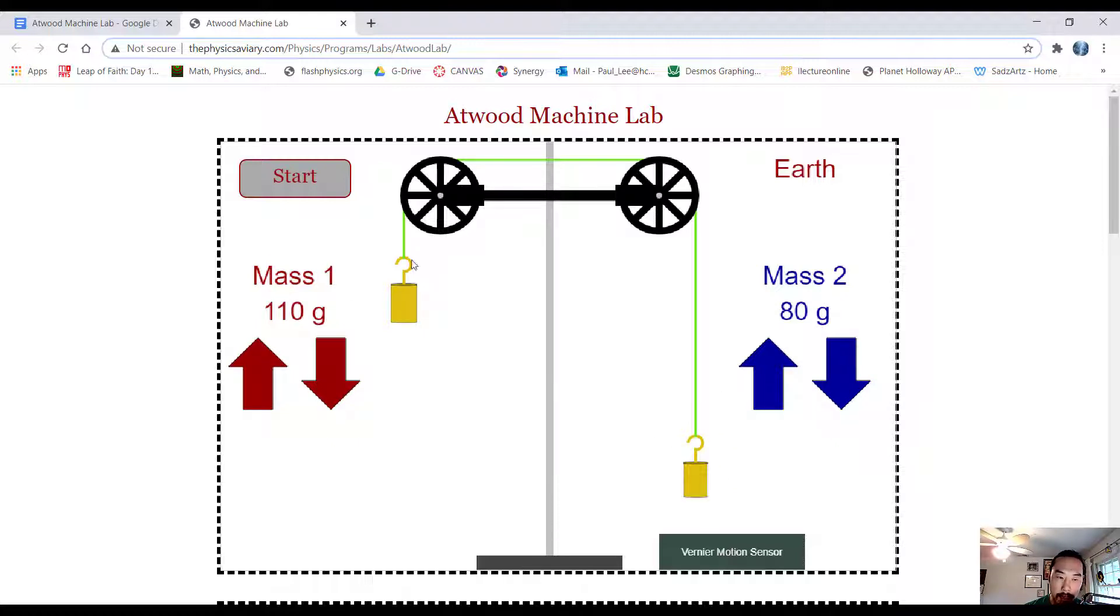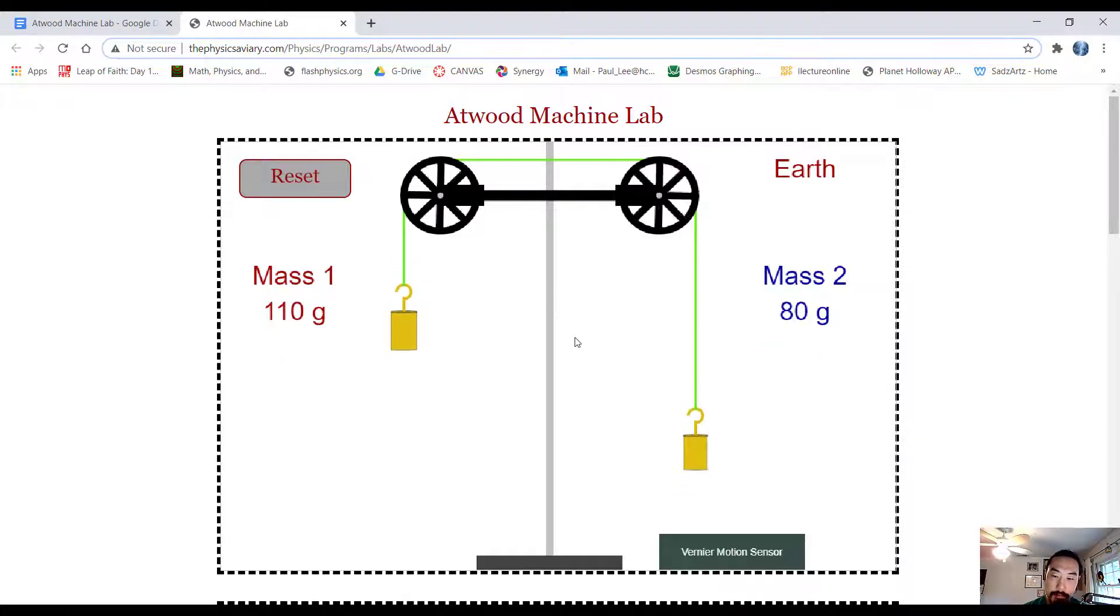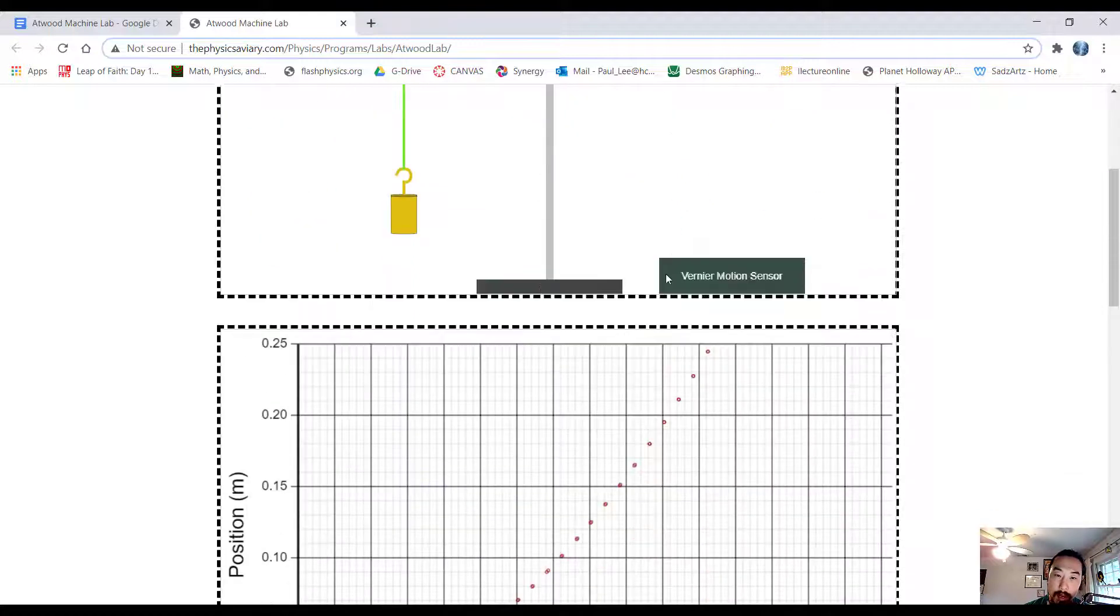Alright, now we can expect, because mass 1 is more massive than mass 2, the force of gravity is pulling on this side a lot more than on the right hand side. So we can expect mass 2 to rise while mass 1 falls. So I'm going to click Start, and we see that. Okay, so this is great,